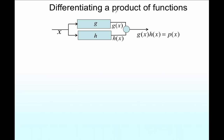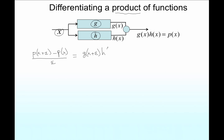Let's move now to a product of functions. Here is a function g and another function h — they both get the same input x. The outputs g of x and h of x are multiplied together to give p of x. Now let's take the derivative of the product, which means we calculate p of x plus epsilon minus p of x, divided by epsilon. That's g of x plus epsilon times h of x plus epsilon minus g times h, divided by epsilon — which doesn't look very useful, so let's try a trick.